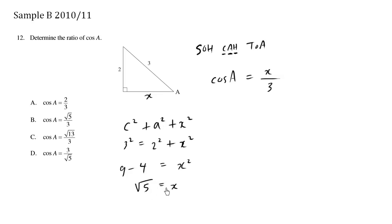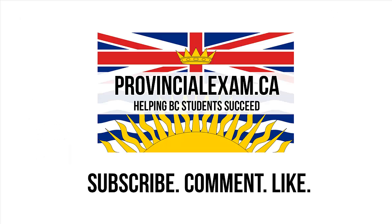We're going to take the positive value because x has to be a positive length. So we solve x to be root 5. So cosine of A is root 5 over 3. Answer B. Let's go in!